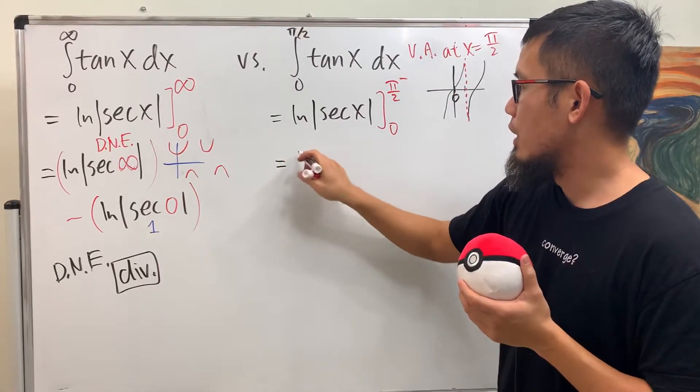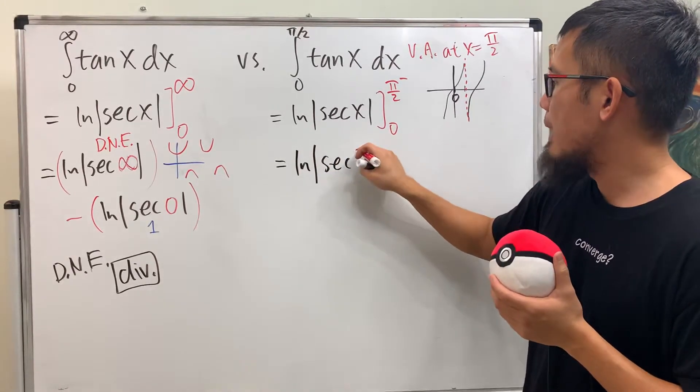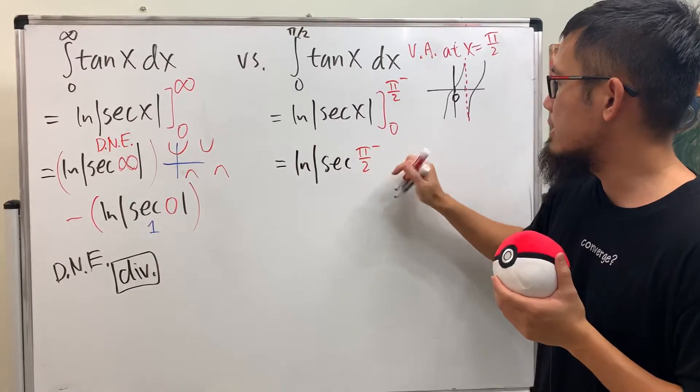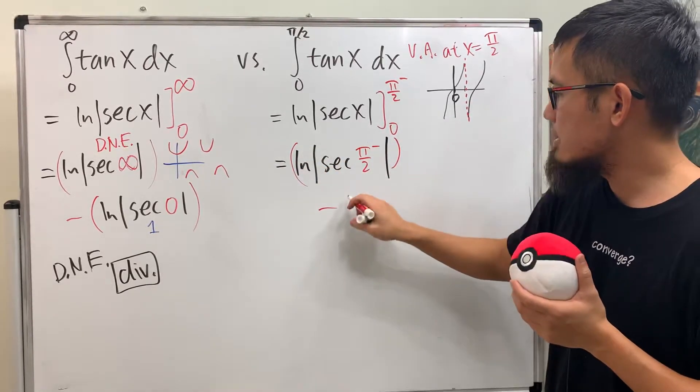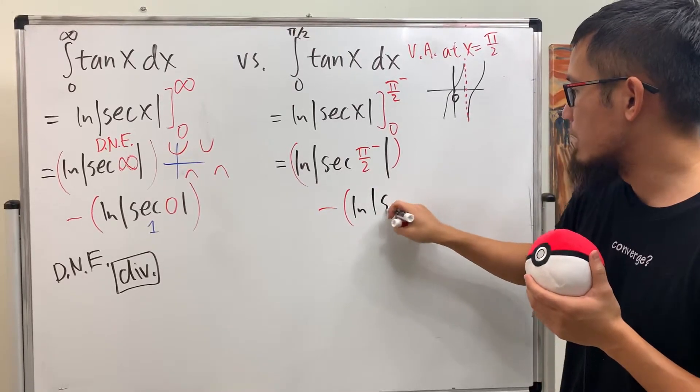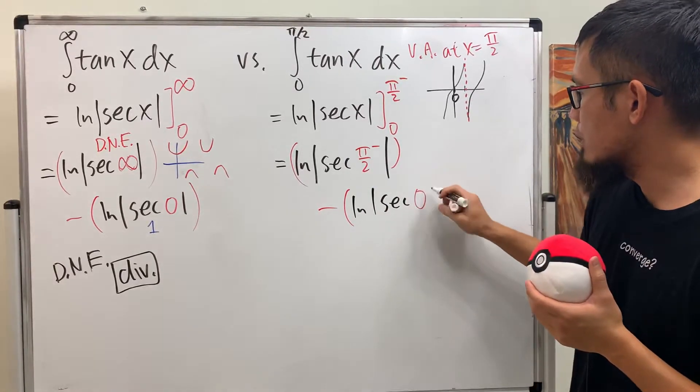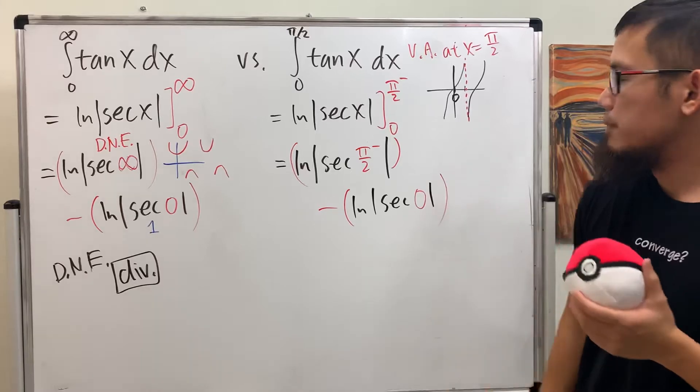Here we have ln absolute value of secant π over 2 minus. That's the first part. Minus the second part, ln absolute value secant 0.